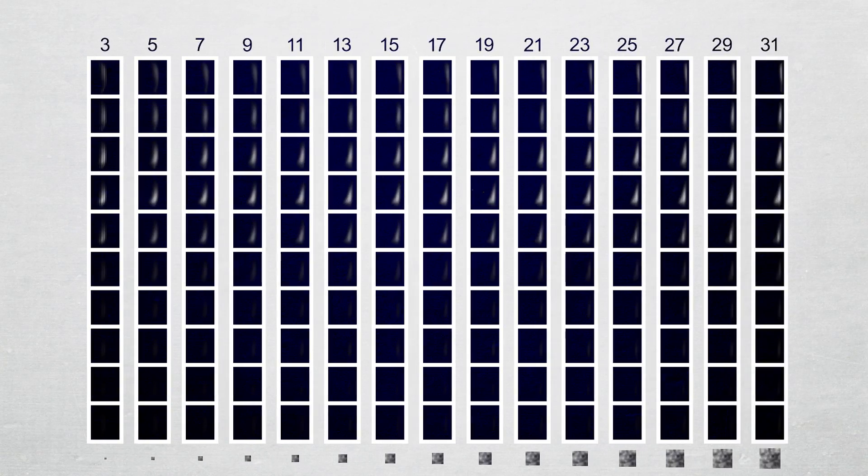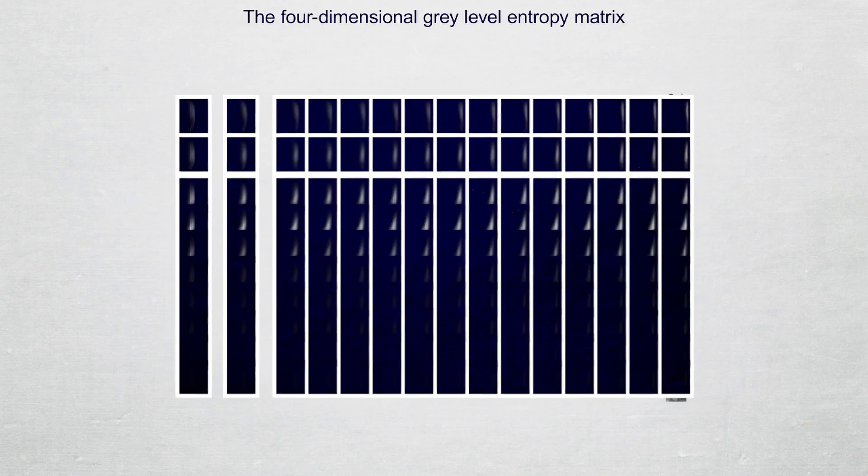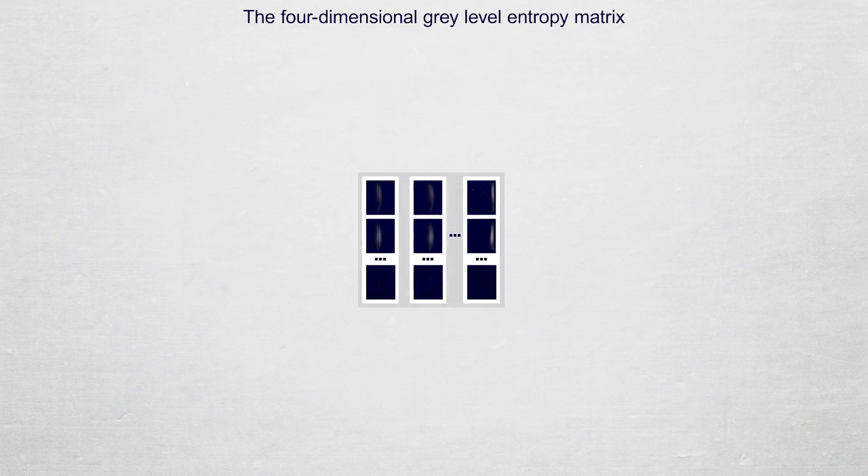This set of matrices is referred to as the four-dimensional gray level entropy matrix of the tumor sample. For this animation, we will abbreviate the matrix and refer to it as GLEM4D.